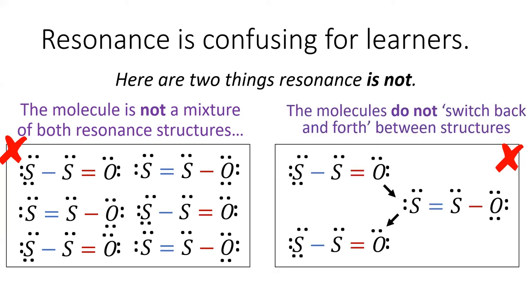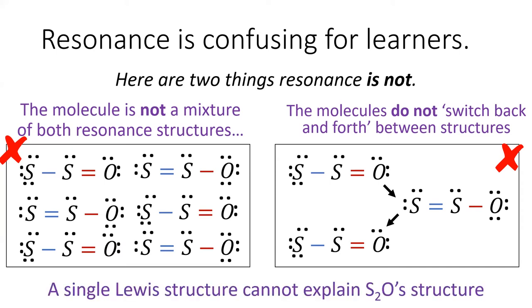Learners also sometimes imagine that resonance means the molecule is rapidly switching its double bond back and forth between sulfur and oxygen. This is not correct, either. A sample of S2O contains no single bonds or double bonds. It contains only bonds in between single and double. In reality, we cannot represent the S2O molecule with a Lewis structure. It's just impossible.